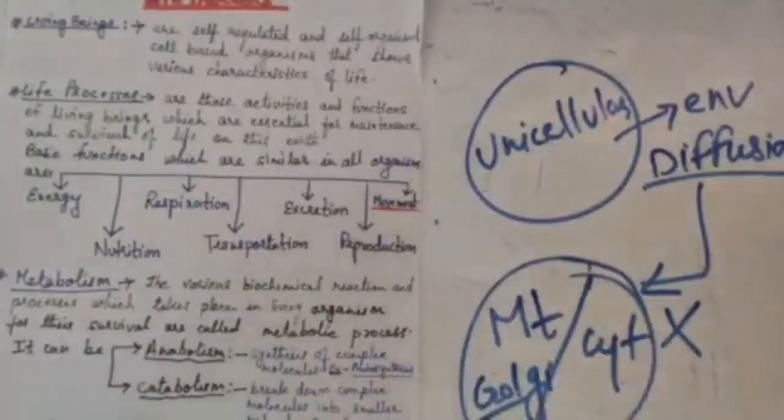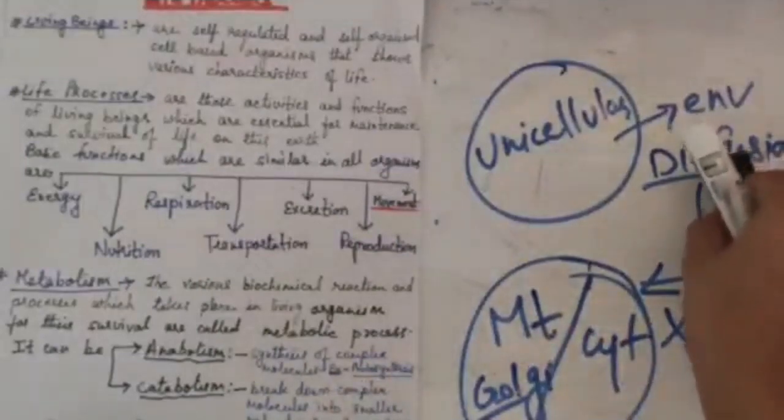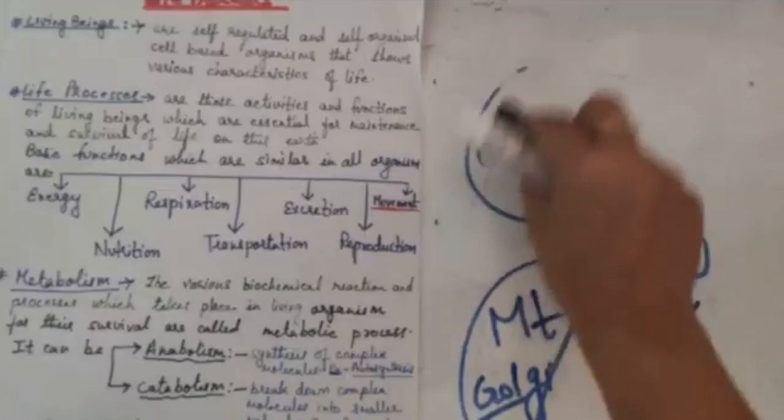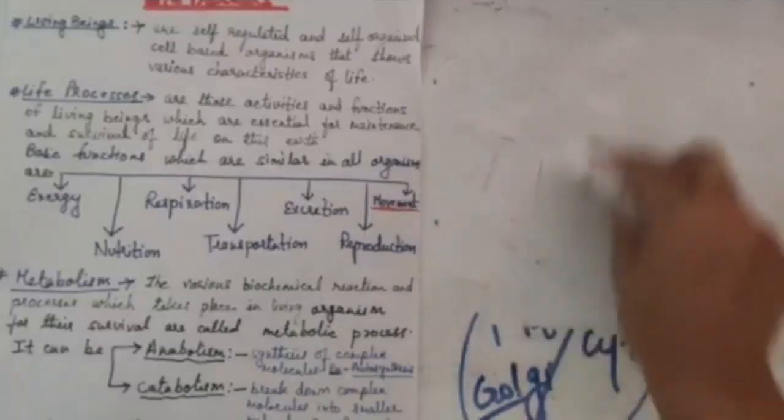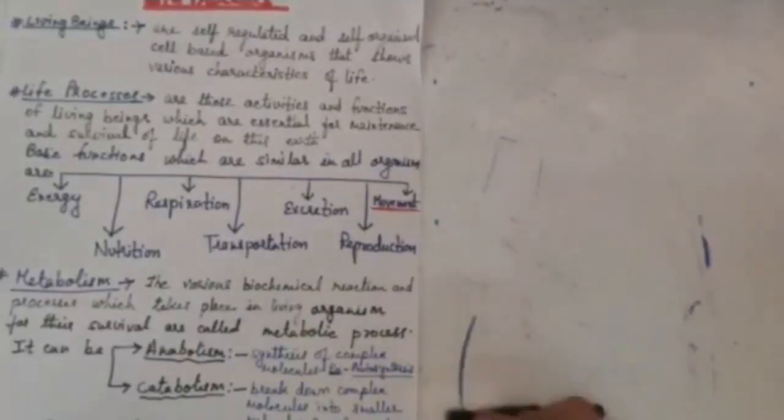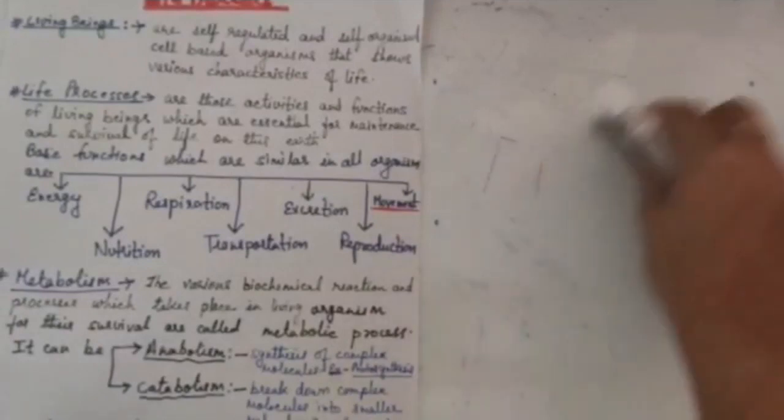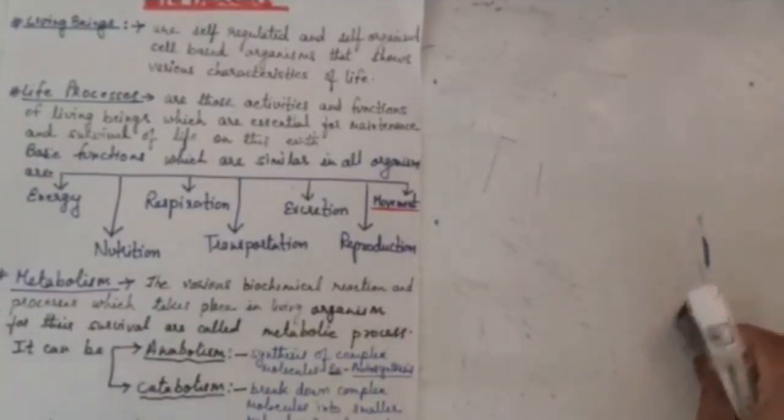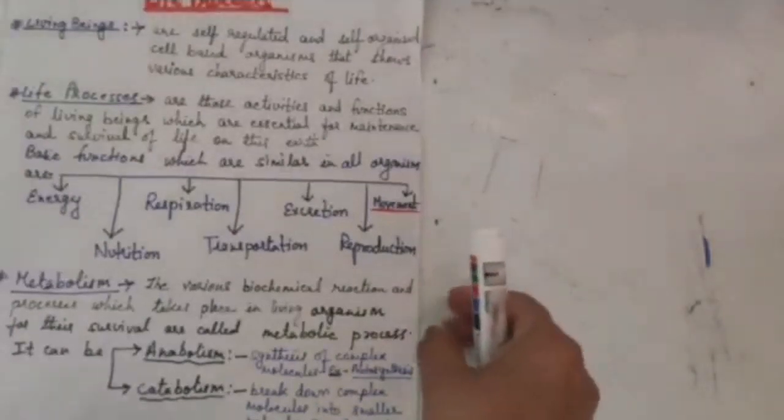We can say that diffusion is a successful process of obtaining oxygen by unicellular organisms like amoeba. However, it cannot meet the requirement of multicellular organisms because in them every cell is not exposed to oxygen containing environment.